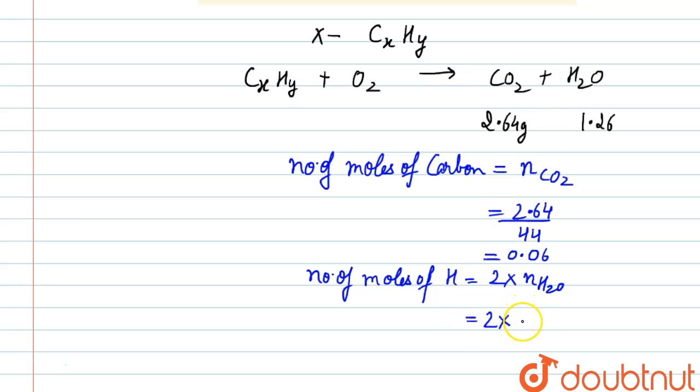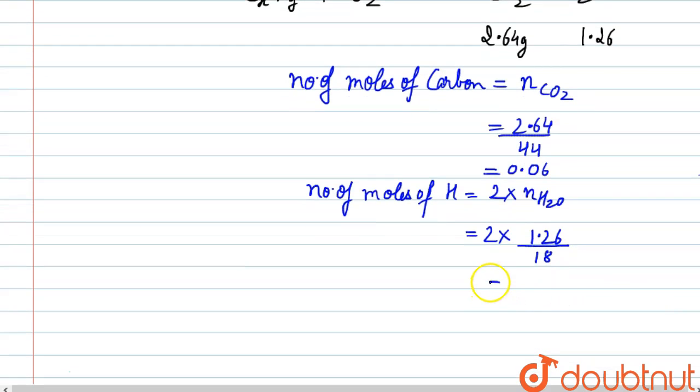the number of moles of water. We are given 1.26 gram of water divided by the molar mass, that is 18. This equals 2 × 1.26/18 = 0.14.